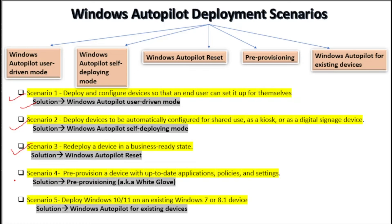The fourth scenario is to pre-provision a device with up-to-date application and policy settings. In that case we can use pre-provisioning, also known as white glove. The last scenario is where we want to deploy Windows 10 or 11 on existing Windows 7 or 8.1 devices. In that case we can use Windows Autopilot for existing devices.